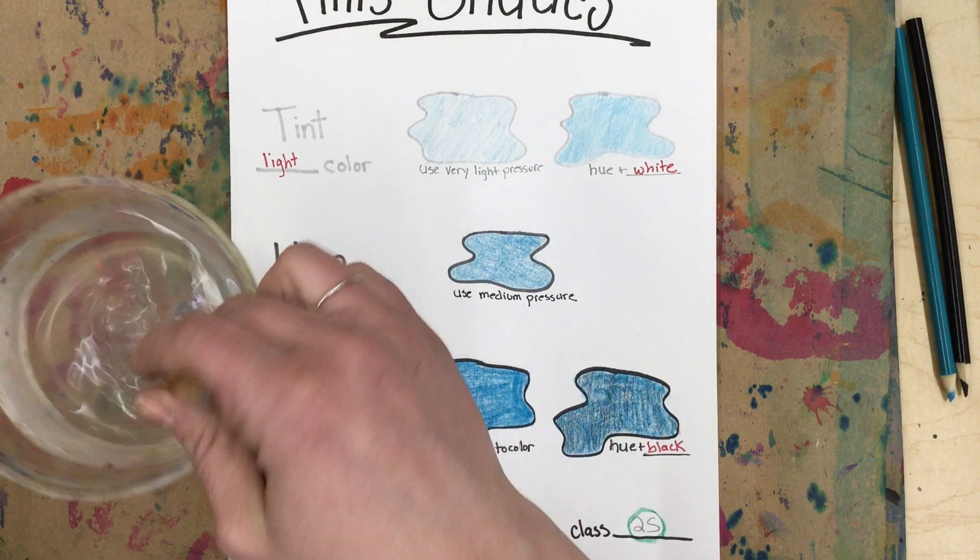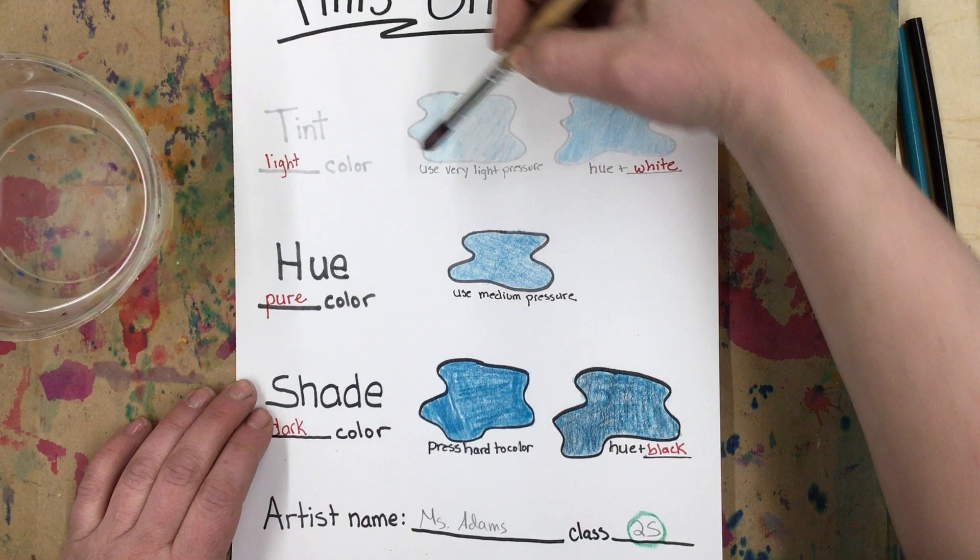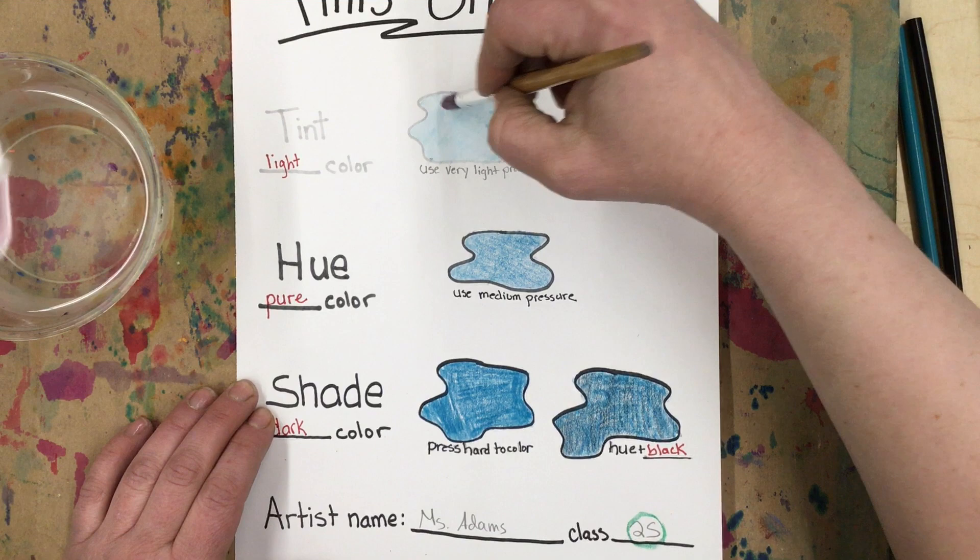Watercolor pencils look and feel like colored pencils, but they're actually like dried paint in pencil form. We can activate the paint by adding water. So dip your brush into clean water and paint over top of the color. Carefully outline the shape and fill that area with water.